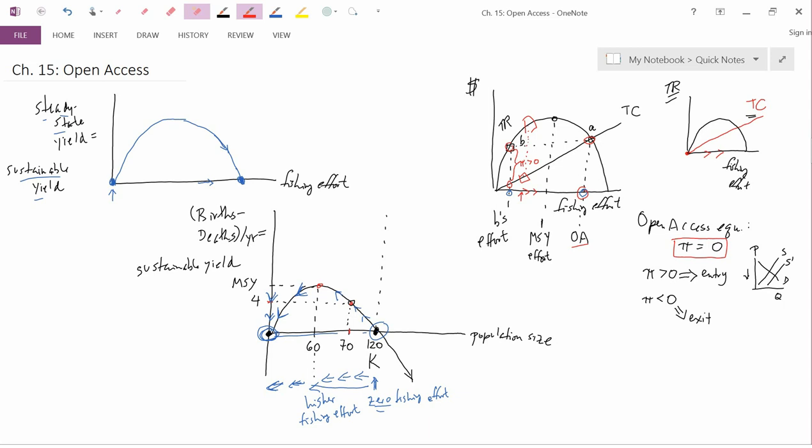We call this situation the tragedy of the commons. This is the title of a famous article that was written in the 1960s. And a better term would be the tragedy of open access. The author was a biologist, not an economist, so he used the term commons instead. But the tragedy of the commons or the tragedy of open access is that each individual has an incentive to overexploit the resource. And so in the aggregate, the resource gets overexploited.